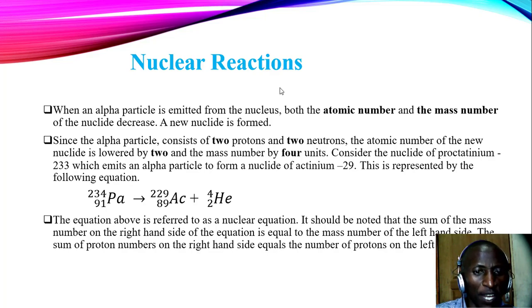Number 2, the equation above is referred to as a nuclear equation. It should be noted that the sum of the mass number on the right hand side is equal to the mass number on the left hand side. The sum of protons also on the right hand side is equal to the number of protons on the left hand side. To explain that look at 229 plus 4 gives you 234. So the mass numbers are balanced on the left and on the right. 89 plus 2 gives you 91. The atomic numbers, that is number of protons are balanced on the left and also on the right.